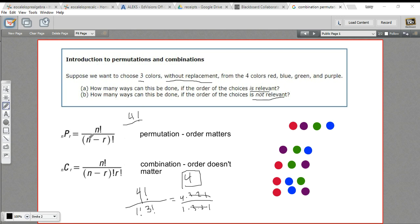And then on the bottom, n minus r, so n is 4 minus 3, so that's 1 factorial. So on the bottom we're just going to get 1. On the top we're going to get 4 times 3 times 2 times 1. 4 times 3 is 12, times 2 is 24. So there are 24 possible combinations of three colors from this group of four when the order matters.